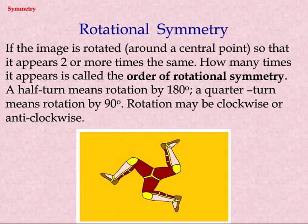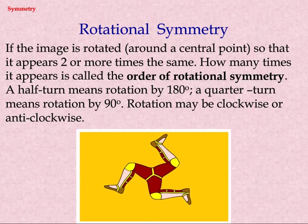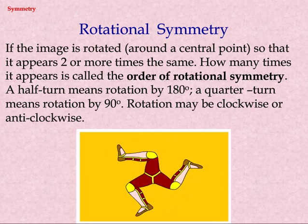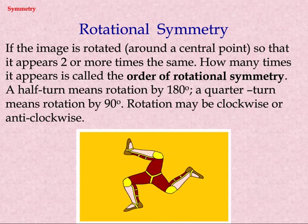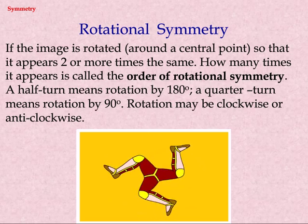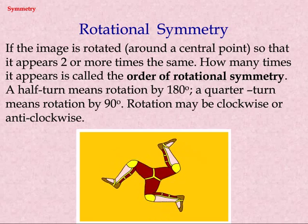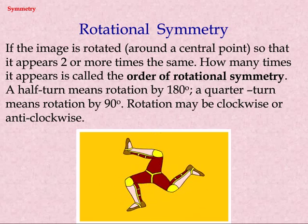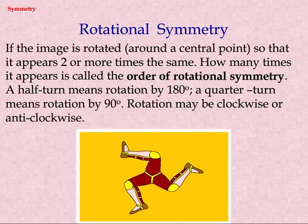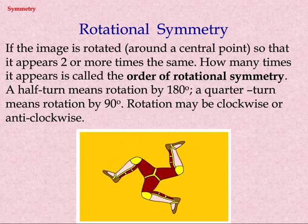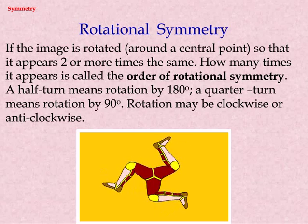Rotational symmetry: if the image is rotated around the central point so that it appears two or more times the same, how many times it appears is called the order of rotational symmetry. A half turn means rotation by 180 degrees. A quarter turn means rotation by 90 degrees. Rotation may be clockwise or anticlockwise.